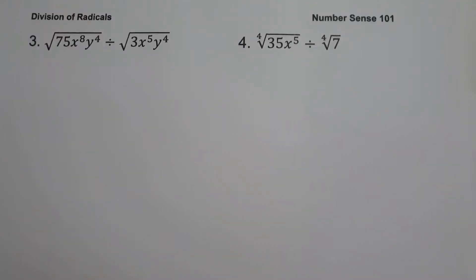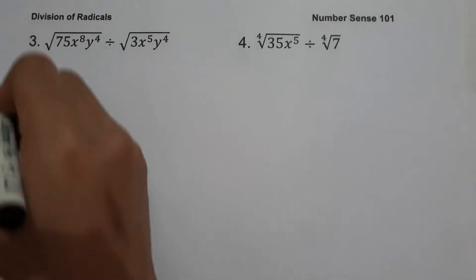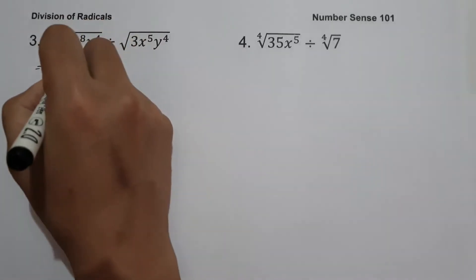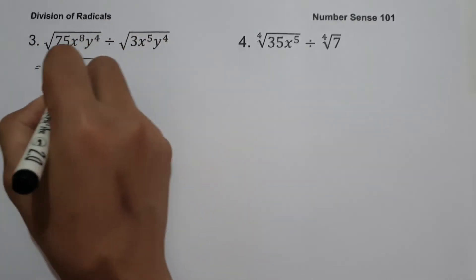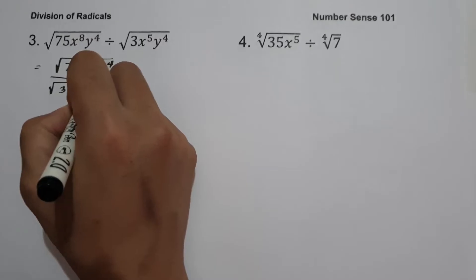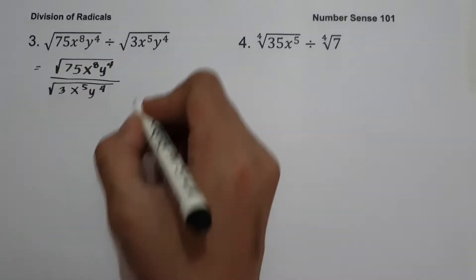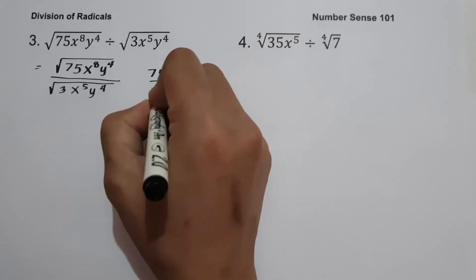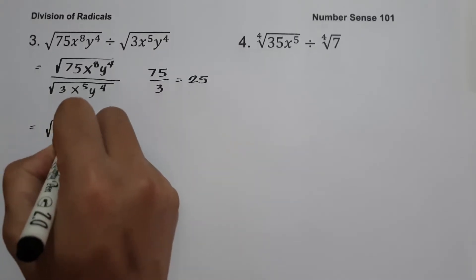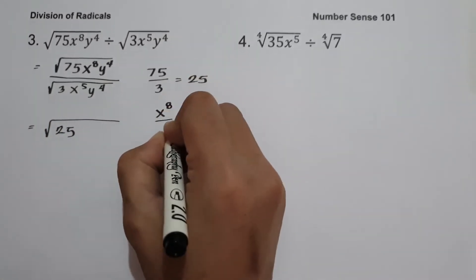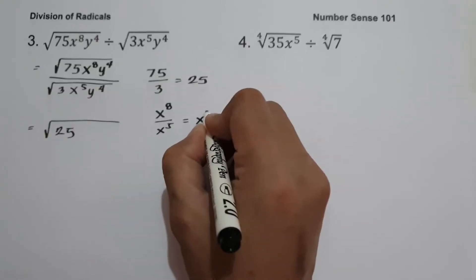On example number three, we have square root of 75x raised to 8, y raised to 4, divided by square root of 3x raised to 5, y raised to 4. Since we have the same index, let us rewrite in fraction form. 75 divided by 3 is 25, so we have square root of 25. Then x raised to 8 over x raised to 5 gives x cubed.